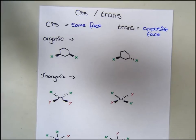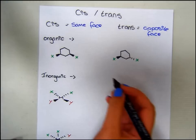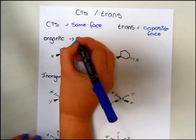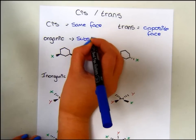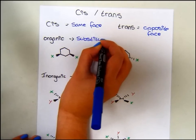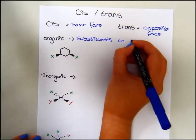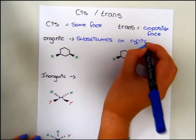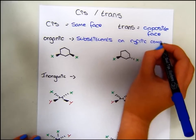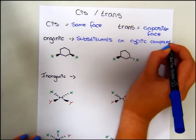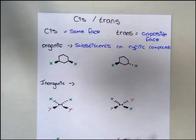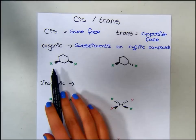Cis and trans can be used in organic chemistry to describe substituents on cyclic compounds. So here is an example of a cyclic compound with two substituents, X.